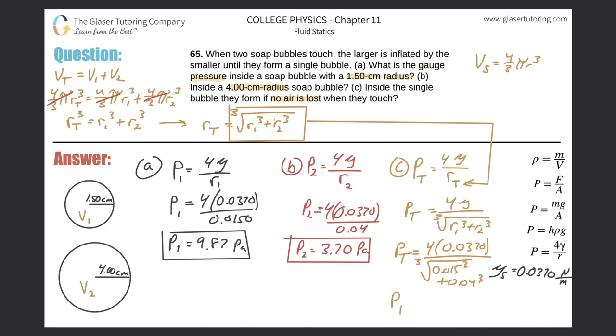Plug it into the calculator: 4 times 0.037, get an answer, then divide that by the cube root of 0.015³ plus 0.04³. We get a value of about 3.64, considering rounding.